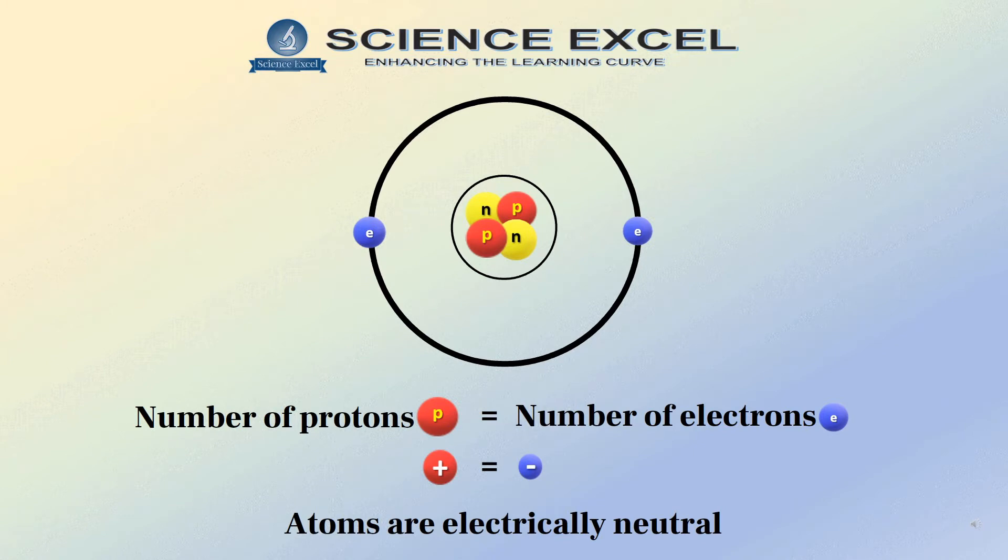Now that we have a good understanding of the structure of an atom, let's dwell deeper into the world of atomic number and atomic mass number which are based on the subatomic particles in the nucleus, the protons and the neutrons.